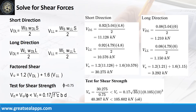At short direction, shear force from dead load is 11.128 kN and live load is 10.576 kN, for a factored shear force of 30.275 kN. At long direction, shear force from dead load is 1.21 kN and live load is 1.15 kN, for a factored shear force of 3.292 kN. The nominal shear force is 40.367 kN, less than the 105.602 kN concrete shear capacity.